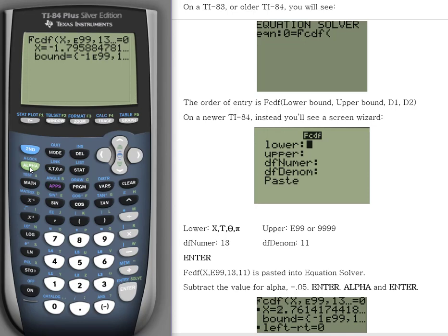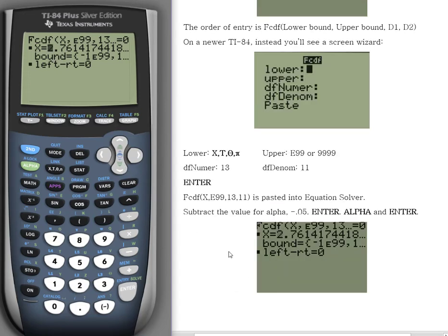The last step is to press ALPHA and ENTER, and that returns our F critical value of 2.76. The F which has 5% of area to the right of it with the degrees of freedom of 13 and 11.